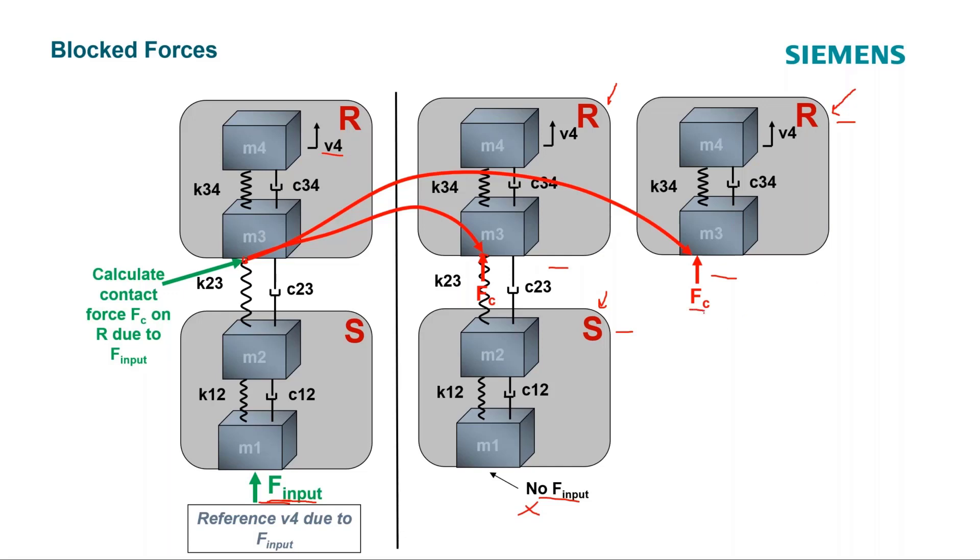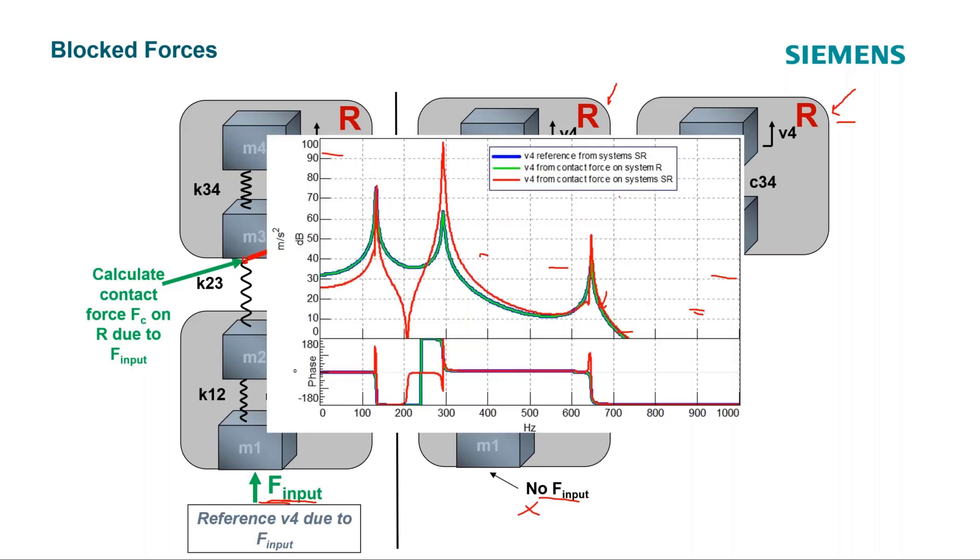Yeah. And so some people call this an interface force or a contact force. And you're right, Charles. If I went and did the calculations, because it got all the mass in the springs, the blue line, V4, was our reference from the combined system with this F input. And it matched, when we applied the force, just the system R. We got a line-on-line match. In fact, it's really hard to see, but we got blue on green there. Do you see it, that they overlay? Yeah. And when we applied it to the combined system, SR, it totally didn't match.